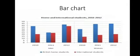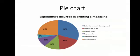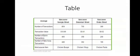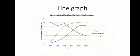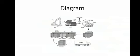Now let's move to the different types of writing task 1. The first is bar chart. There is also pie chart, table, map, line graph, and diagram.